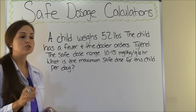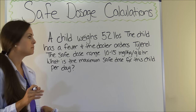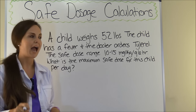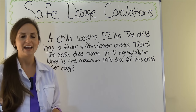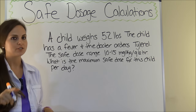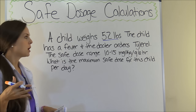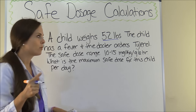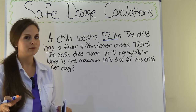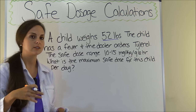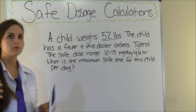The safe dose range for Tylenol is 10 to 15 milligrams per kilogram every six hours. What is the maximum safe dose for this child per day? The most important information: child's weight is 52 pounds, safe dose is 10–15 mg/kg every six hours, and we want the maximum dose per day. We have some extra steps because the safe dose range gives us an individual dose, and we have to figure out how much this child can have throughout a whole day.